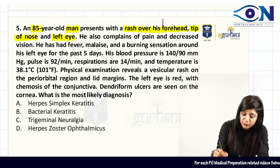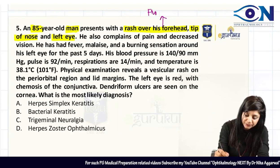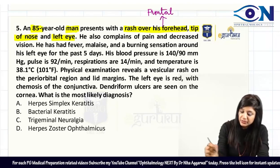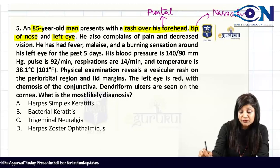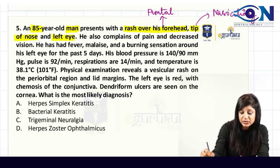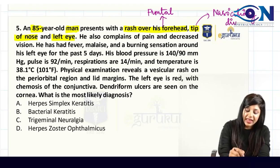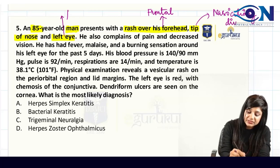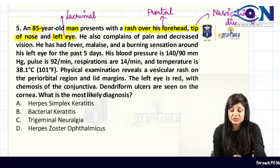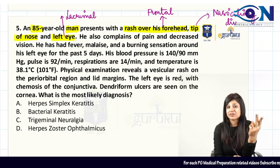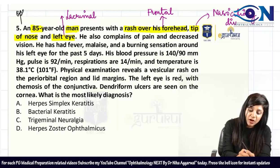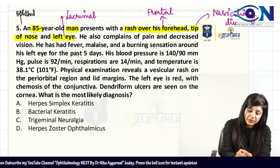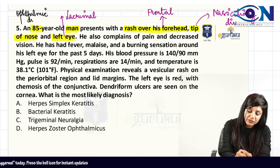Looking at the distribution: the forehead corresponds to the frontal division, the tip of the nose corresponds to the nasociliary division — from the first line we can start diagnosing — and the eye corresponds to the lacrimal division. All three are divisions of the ophthalmic division of the fifth cranial nerve.